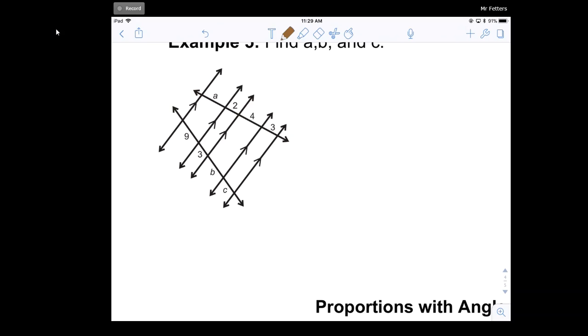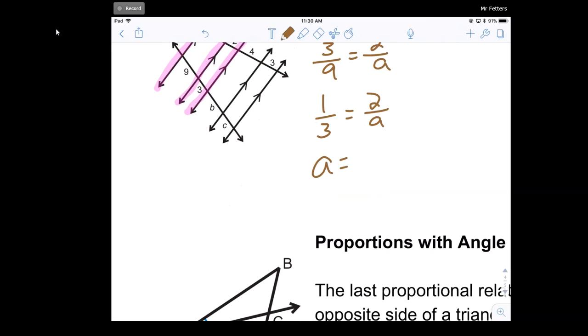Let's first start with A. If I just look at this line, this line, and this line, those three lines, don't look at anything else. I can say 3 over 9 is equal to 2 over A. Now I can reduce this. 3 over 9 can be reduced to 1 third is equal to 2 over A. So that makes it simple. A times 1 is A. 2 times 3 is 6. So A is equal to 6.